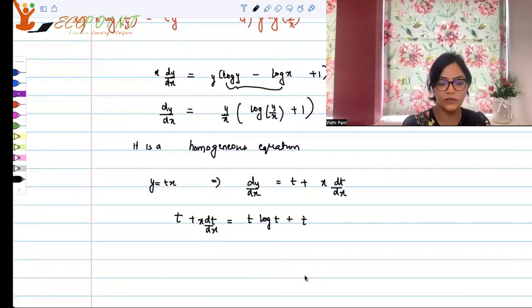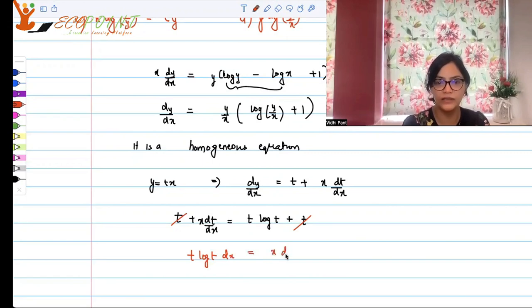Now which means what I can do here, the t's cancel out, t and this t cancel out. And what we get, taking all the t terms on one side, taking all the t terms on one side and x terms on the other, I get t log t dx is equal to x dt.